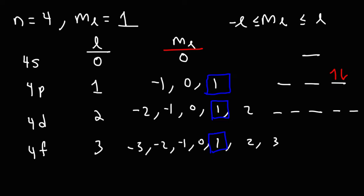So now you know how to determine the maximum number of electrons given a certain set of quantum numbers. Thanks for watching.